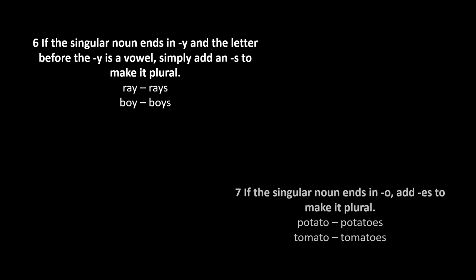Rule 6: If the singular noun ends in O, add ES to make it plural. Examples: potato becomes potatoes, tomato becomes tomatoes.